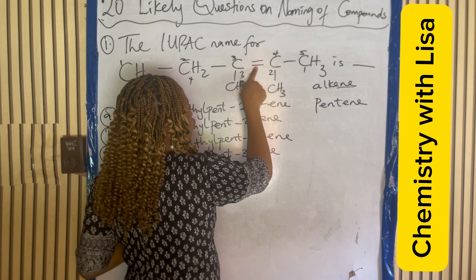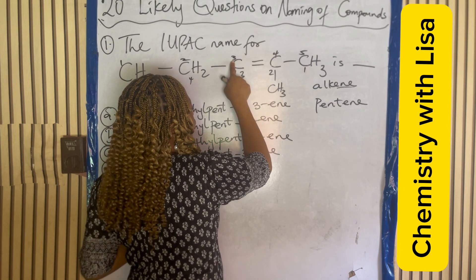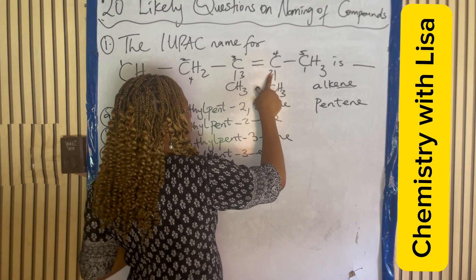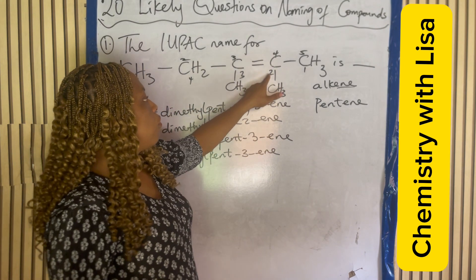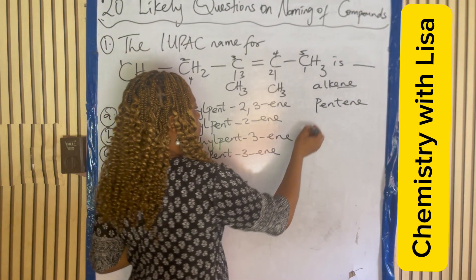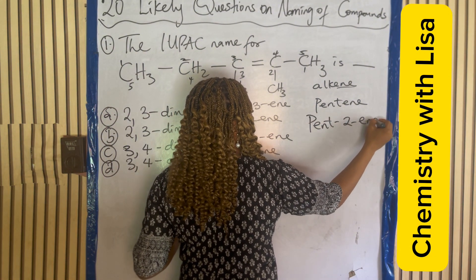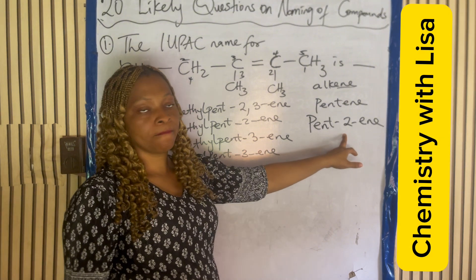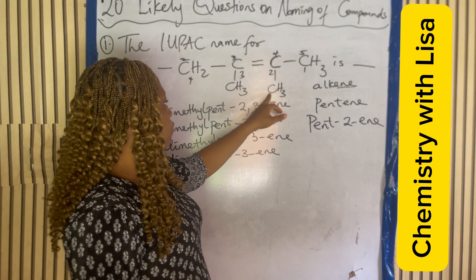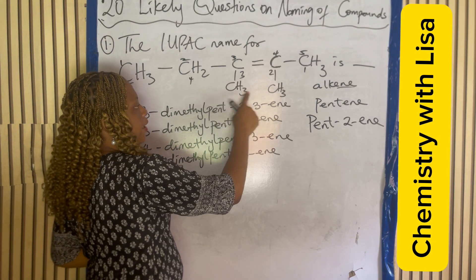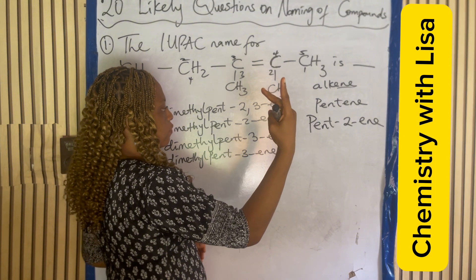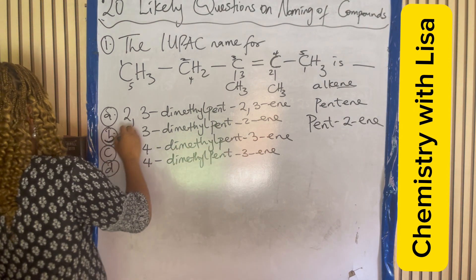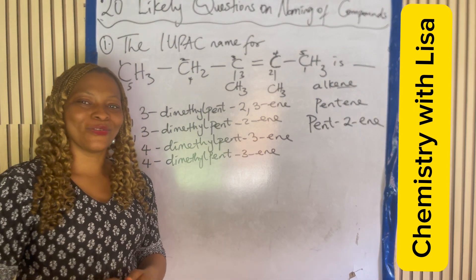Coming from one direction, the functional group is on carbon three and the substituents are on carbons three and four. Coming from the other direction, the functional group is on carbon two and the substituents are on carbons two and three. Two and three is better than three and four, so this is pent-2-yne with substituents at two and three: 2,3-dimethylpent-2-yne. So B is the answer.